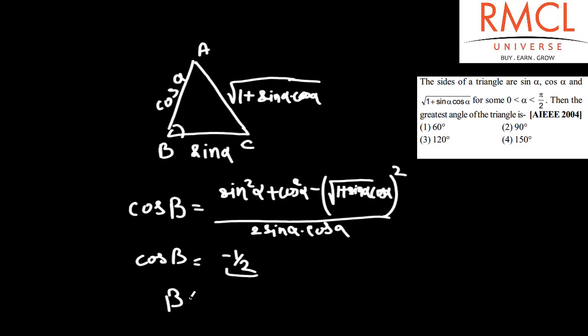If cos B equals -1/2, then angle B equals 120 degrees. Therefore, option 3 is correct.